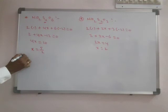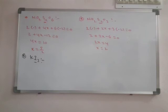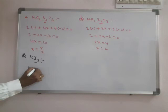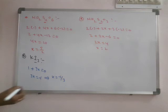For KI3: potassium is plus one, so 1 plus 3x equals zero, giving 3x equals minus one, so x equals minus one-third. This is a fractional oxidation state for iodine.